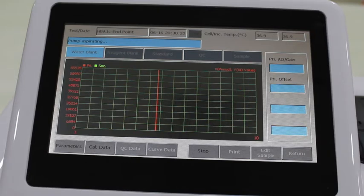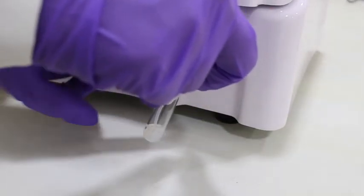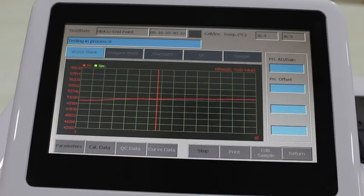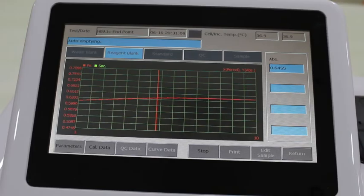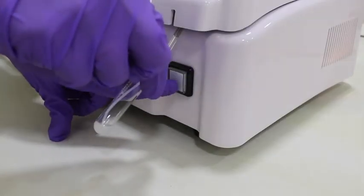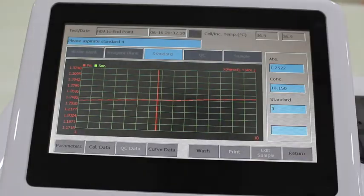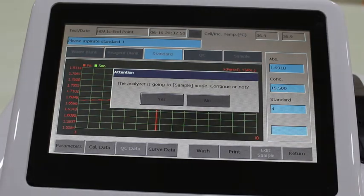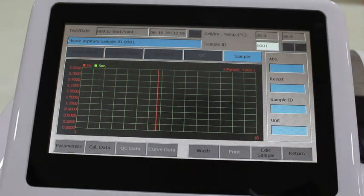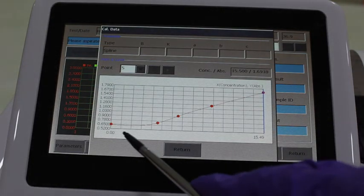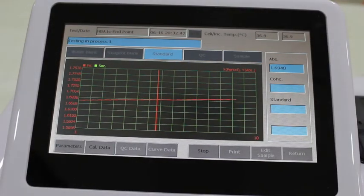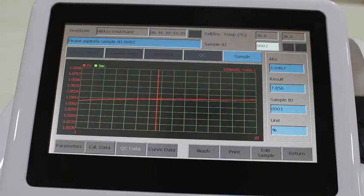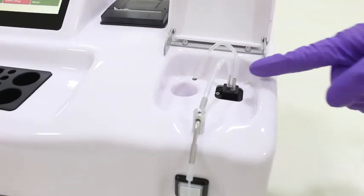Now select the test page. Run water blank as message appears on the screen, then run reagent blank followed by other calibrators one by one. Check the calibration curve. The instrument gets ready to go to sample mode. If the calibration curve is good, then the sample can be run. The sample is run and the results are displayed.